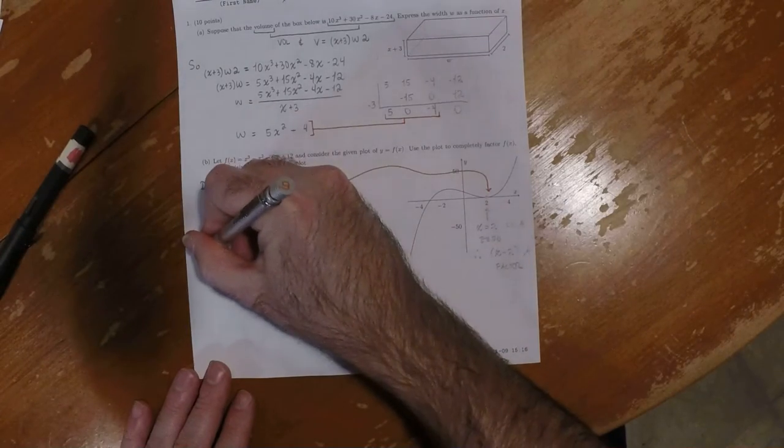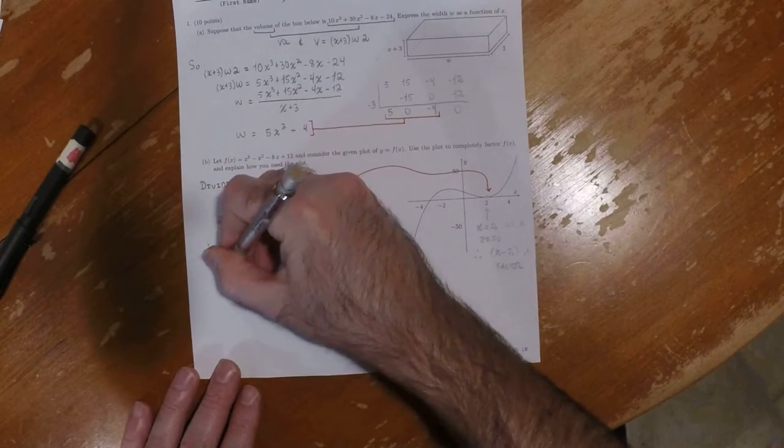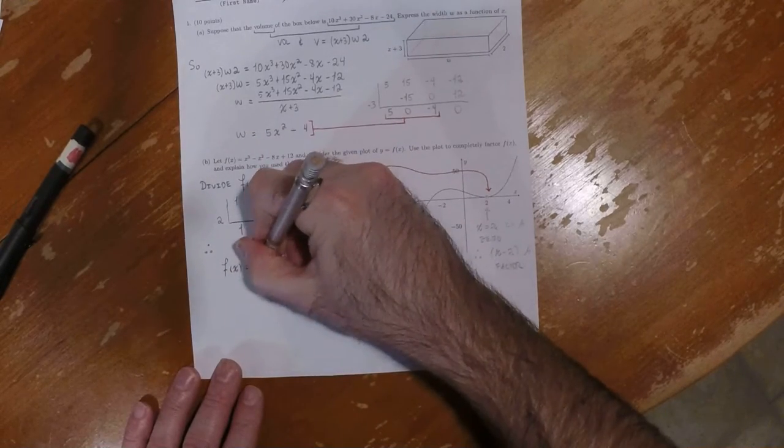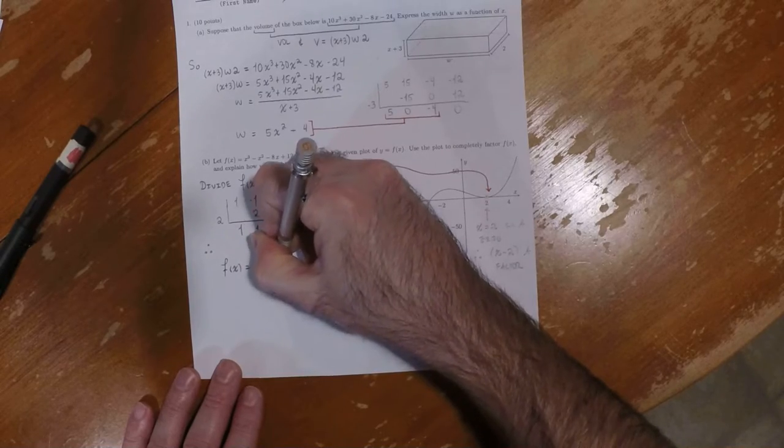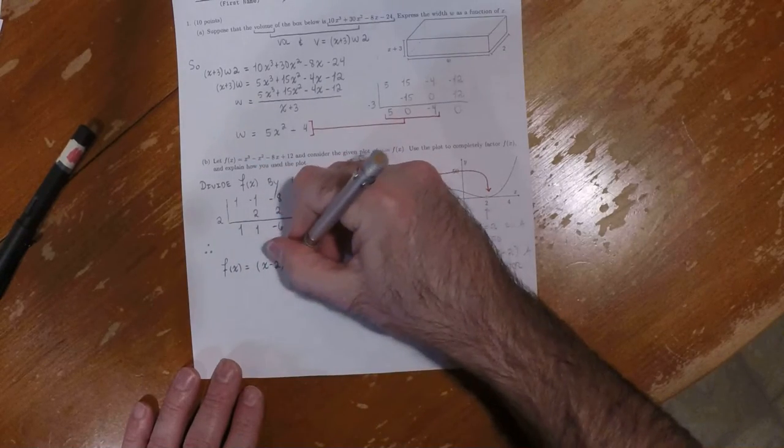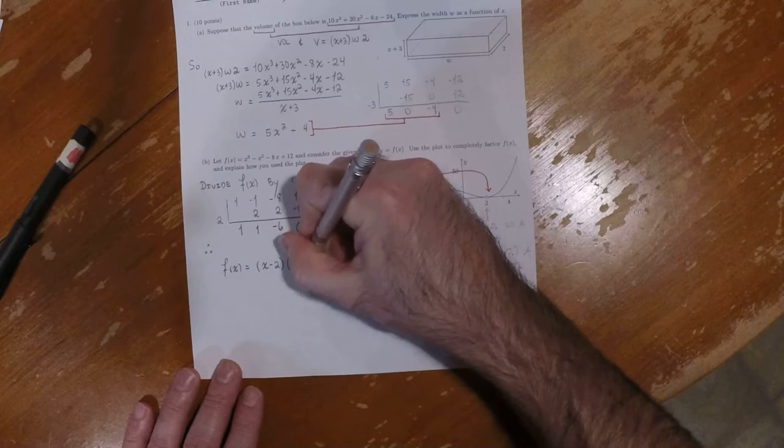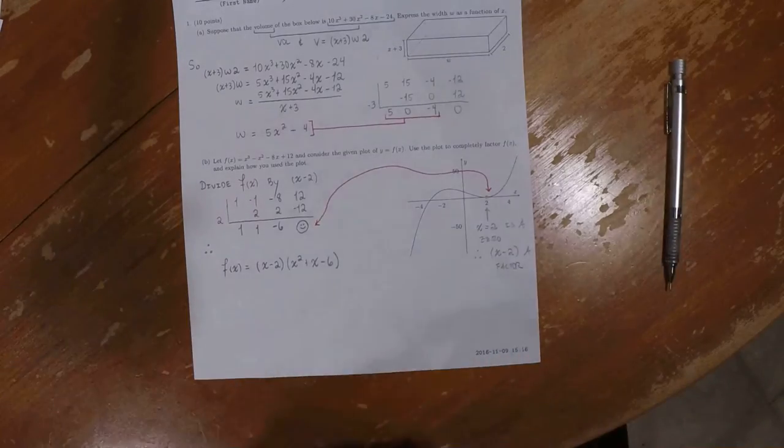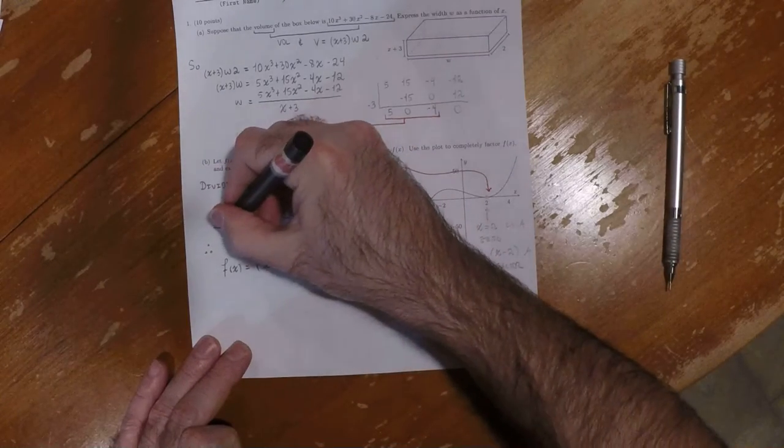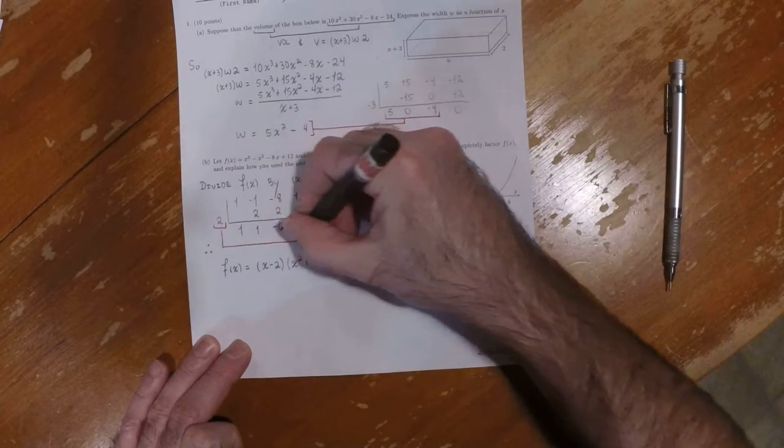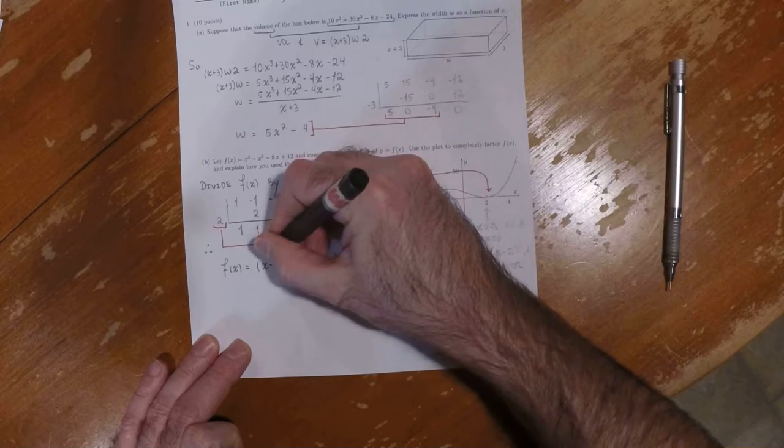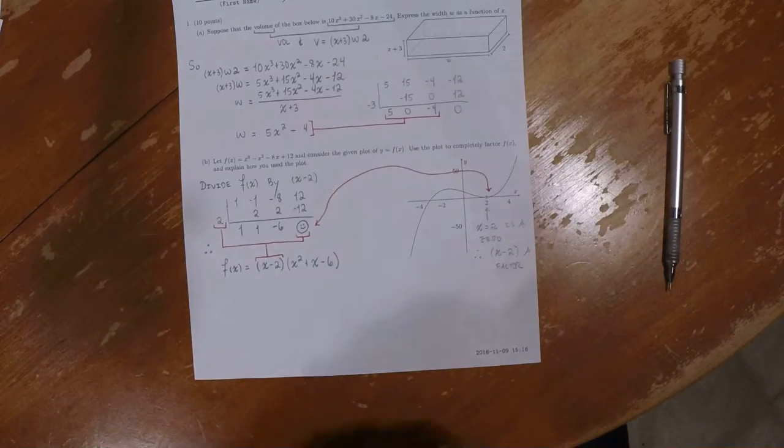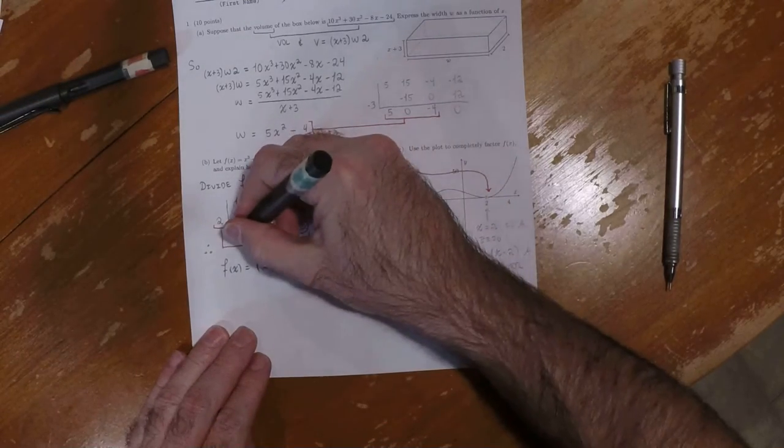So that's telling us that f of x is x minus 2 is one of the factors. And x squared plus x minus 6 is the other factor. So because we got, when we plug in 2, we get 0, that's why that's a factor. And then the quotient is the other factor.